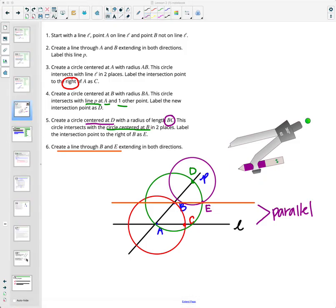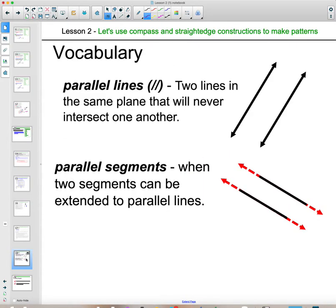Some of the vocab that we just saw in here is parallel lines as well as parallel segments. Parallel lines, remember, are two lines that are never going to touch each other. They're never going to intersect. They are going at exactly the same slope.